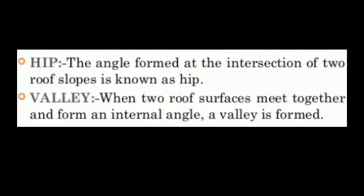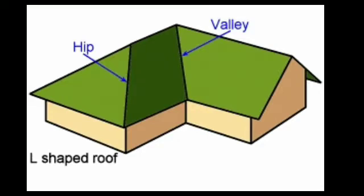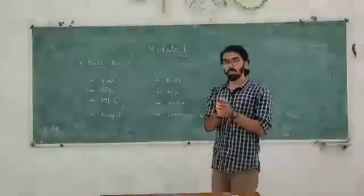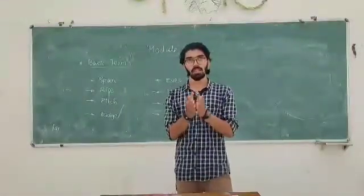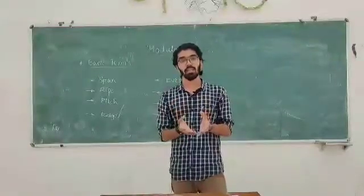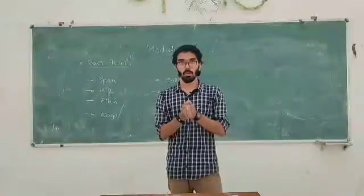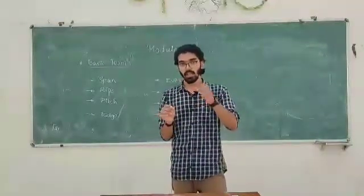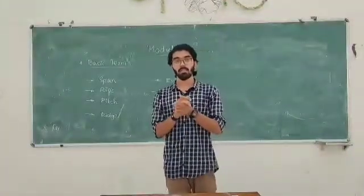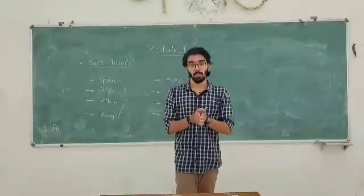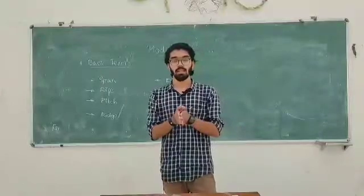The hip is at an external angle. The valley is where two roofs meet at an internal angle. The common rafter supports all the roofing materials and transfers load to the wall plate. There is also the hip rafter, the valley rafter, and the ridge. We can now study some of the terms and move to problems.